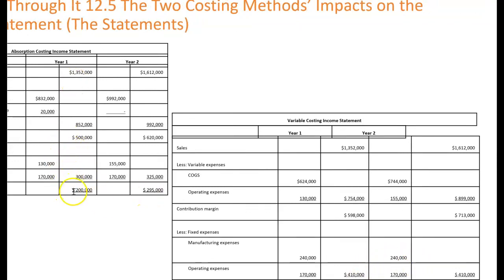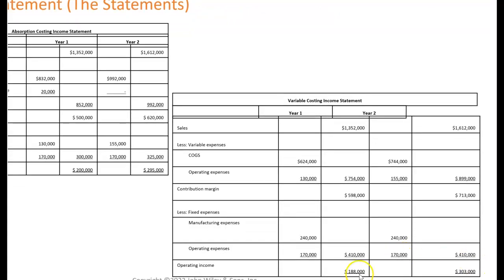Under absorption we had $200,000 operating income. Under variable costing in year one it's $188,000 because all of that fixed manufacturing overhead was deducted — all of it, no matter how many units we sold. In year two, when we clean out that inventory and it moves through the income statement, we've got $295,000 under absorption and $303,000 under variable costing. You can look at this example in the textbook — it's the same one that's in there so you can see all the numbers.